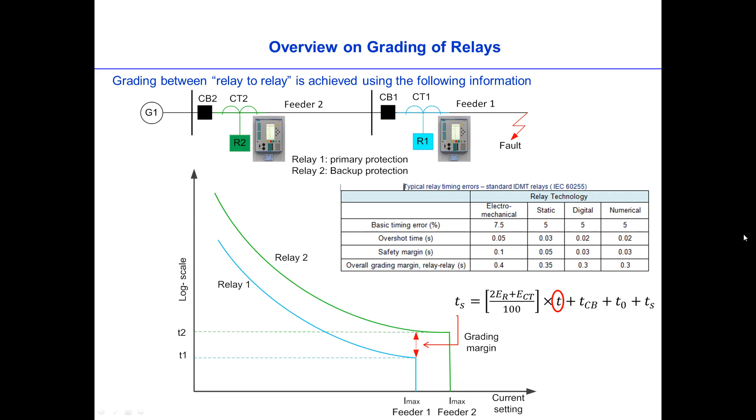If you look up on this one, the T itself is the trip time of the relay. For example, trip time at minimum fault level. So which one is the minimum fault level? Well, this will be the fault level at the end of the network because that's the fault level at minimum.